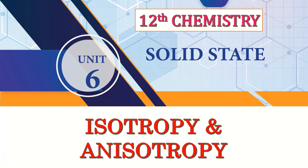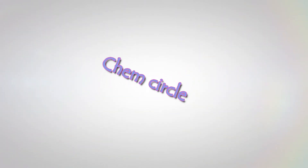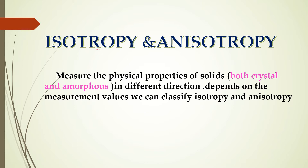In solid state, we are going to look at the topic of isotropy and anisotropy. Isotropy and anisotropy measure the physical properties of solids — both crystalline and amorphous forms — in different directions. We can measure and classify isotropy and anisotropy in different directions.